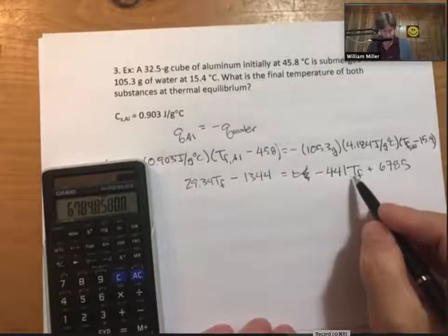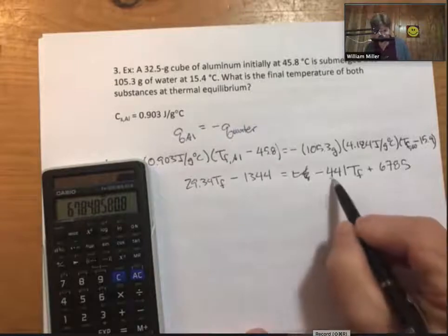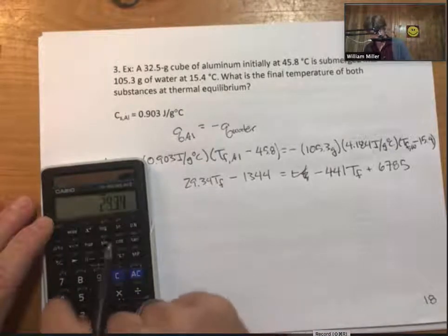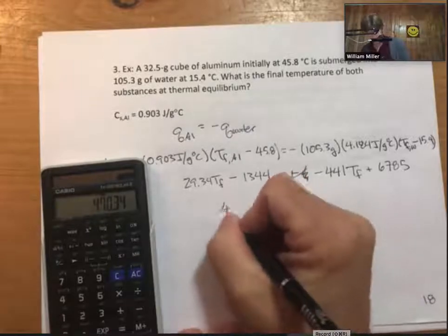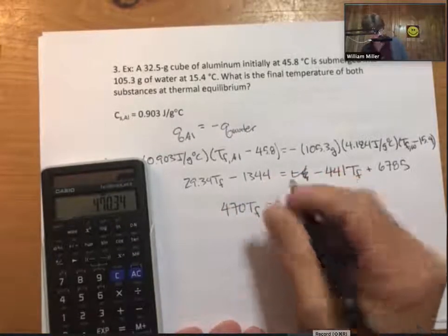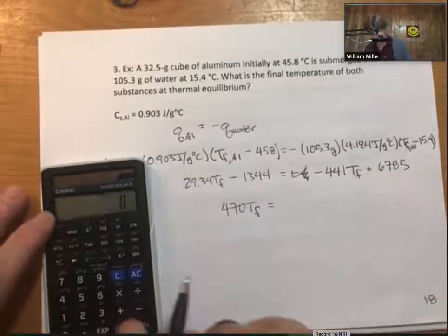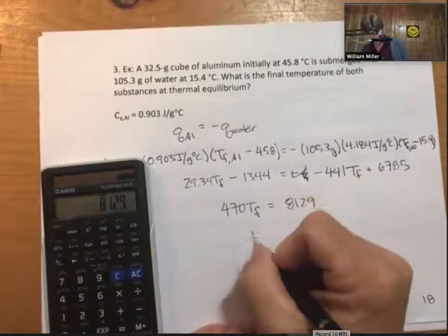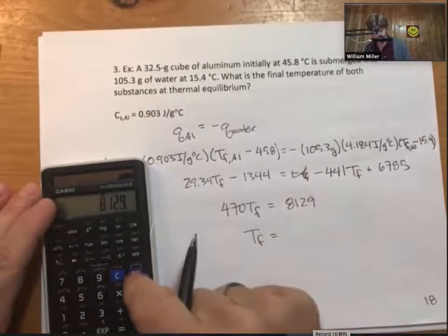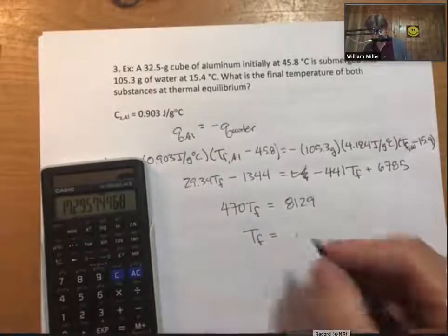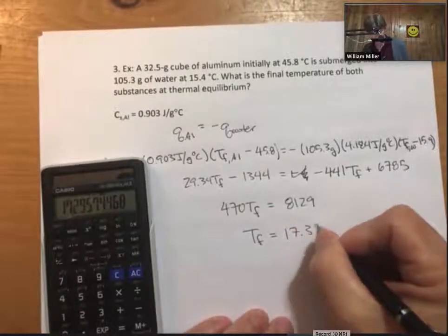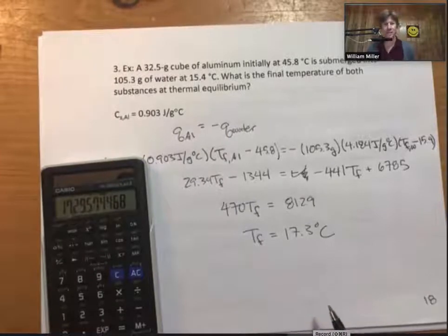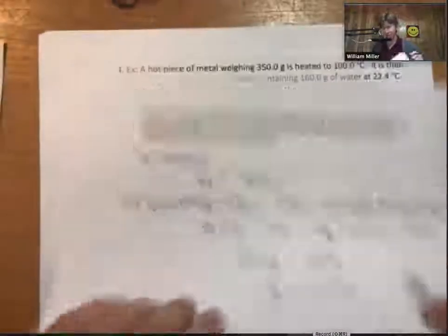I have two tf terms, I'm going to collect them on the left hand side. So 29.34 plus 441 gives 470.34 tf. On the other side, 6785 plus 1344. Divide through and I get my final temperature: 17.3 degrees celsius. There's three examples. There's another example on the next page with a companion problem and a link to receive that.